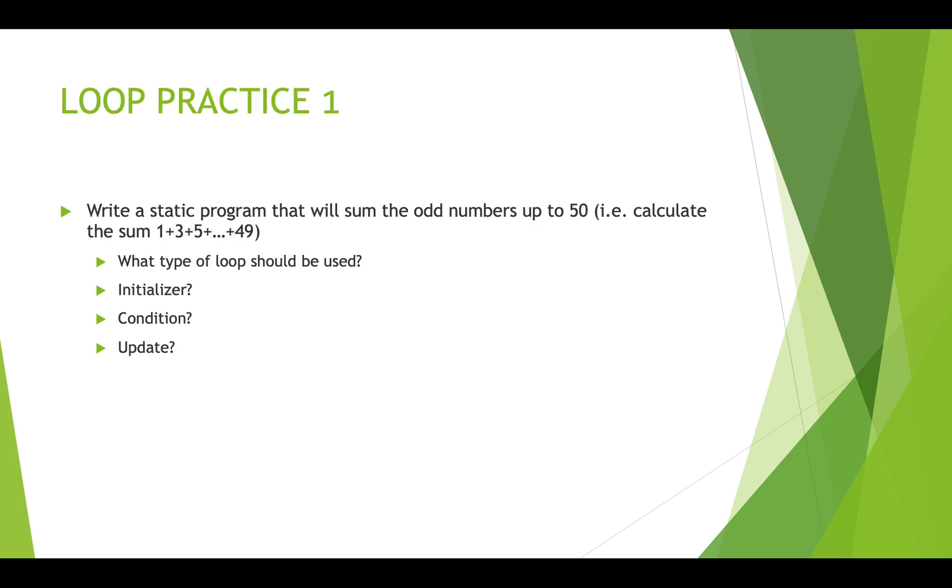So let's go through an example. So our first example is this idea of we're going to write a static program that will sum the odd numbers up to 50. So we want to calculate 1 plus 3 plus 5 plus 7, etc., all the way up to and including summing in 49. So the questions we want to ask are what type of loop should we use? How do we initialize it? What's the condition? And how do we update things?